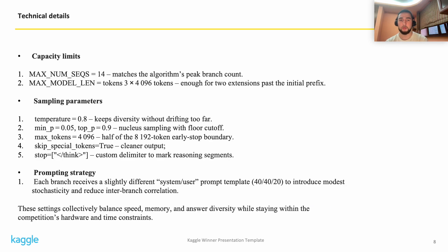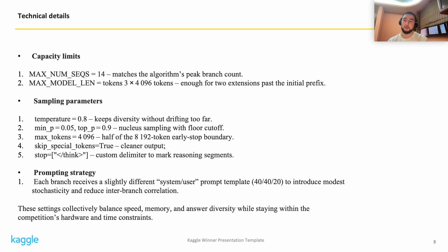Now for the technical details. We have capacity limits: the max number of sequences is set to 14, which is the total number of branches in our generation. The max model length is set to 3 × 4k tokens, which is the total tokens being generated — enough for two extensions past the initial prefix. For sampling parameters, temperature is set to 0.8, keeping things diverse yet stable, and max tokens per forward pass is 4k. As for our prompting strategy, each branch receives a slightly different prompt template to reduce inter-batch correlation. All these things together balance speed, memory, and diversity within the competition's hardware and time constraints.